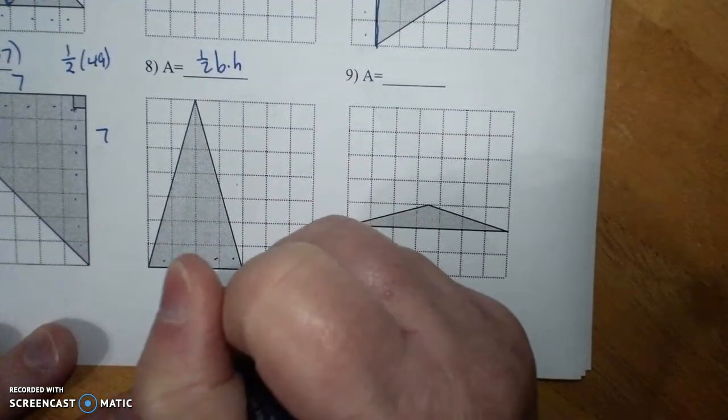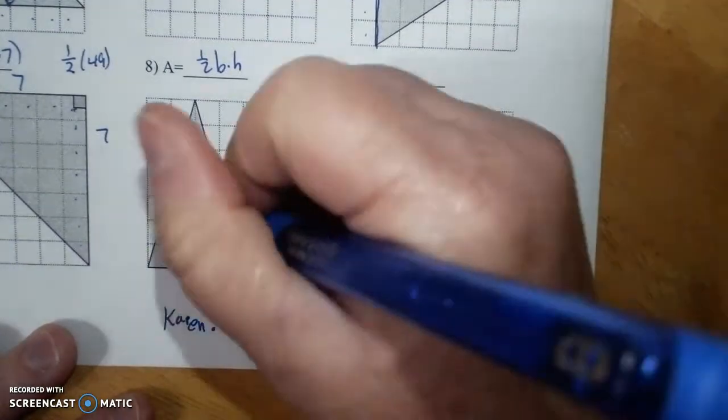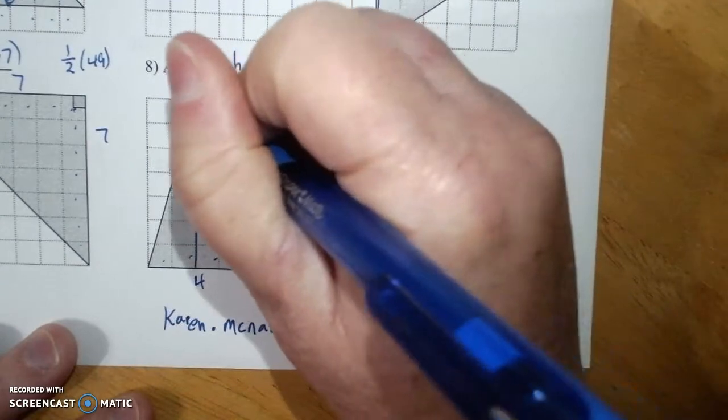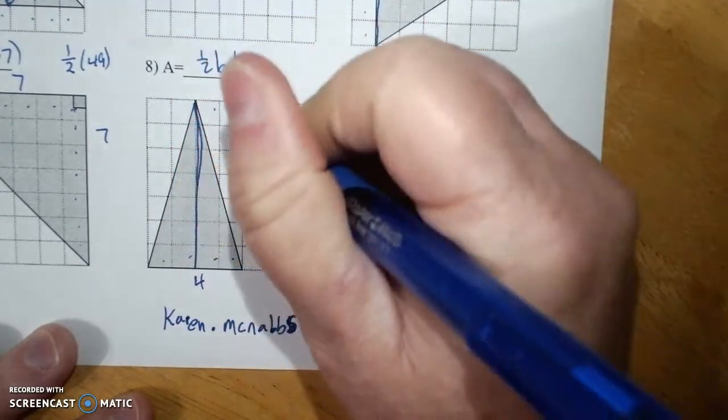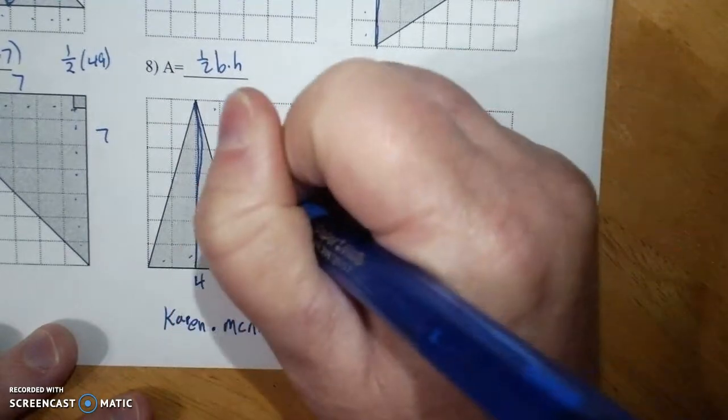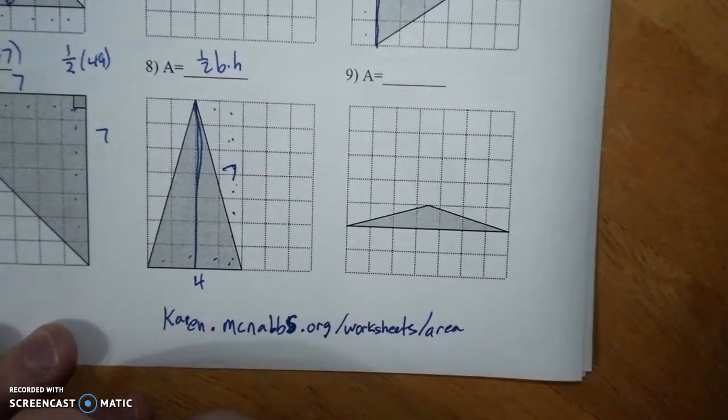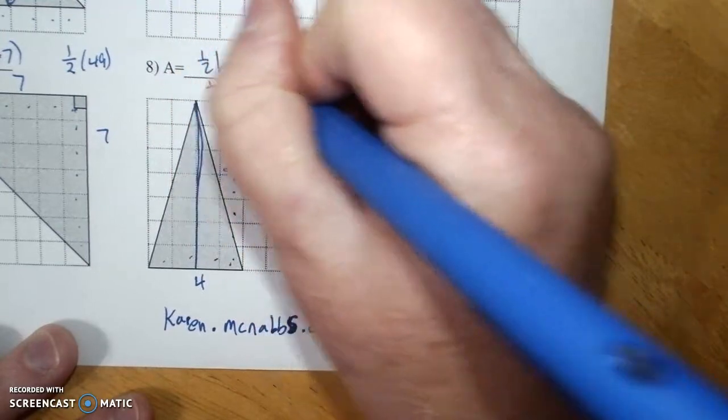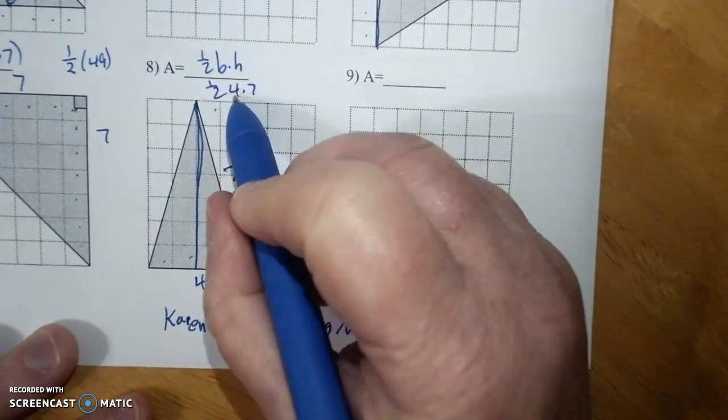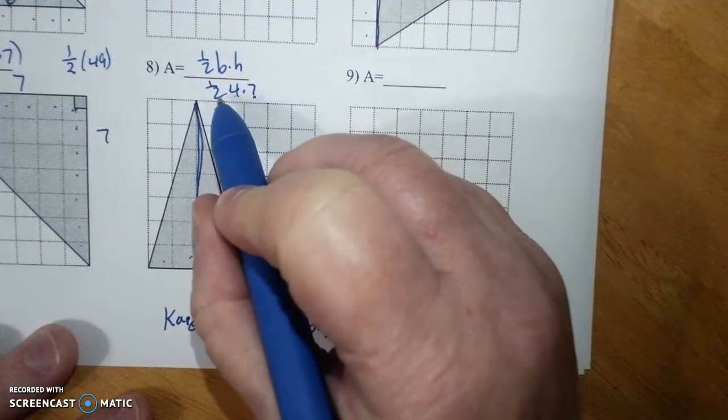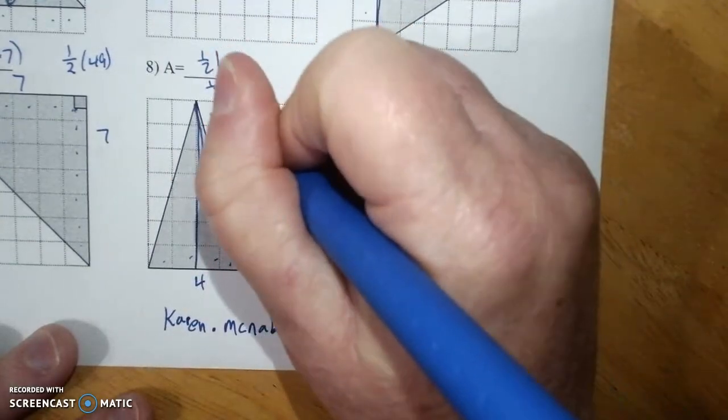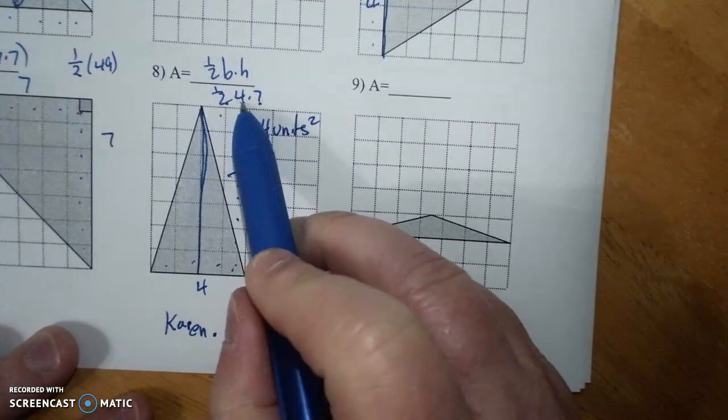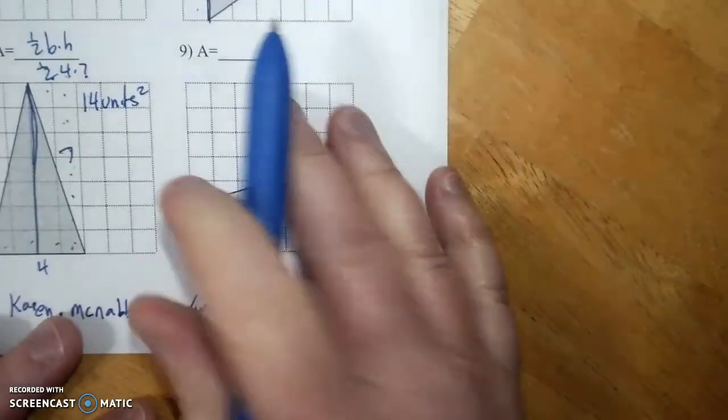One, two, three, four. Remember, the height is perpendicular, so this is the height. One, two, three, one, two, three, four, five, six, seven is the height. So, it's one half of four times seven, which is four times seven is 28. Half is 14, so 14 units squared. I can also do half of four, which is two, and two times seven is 14.